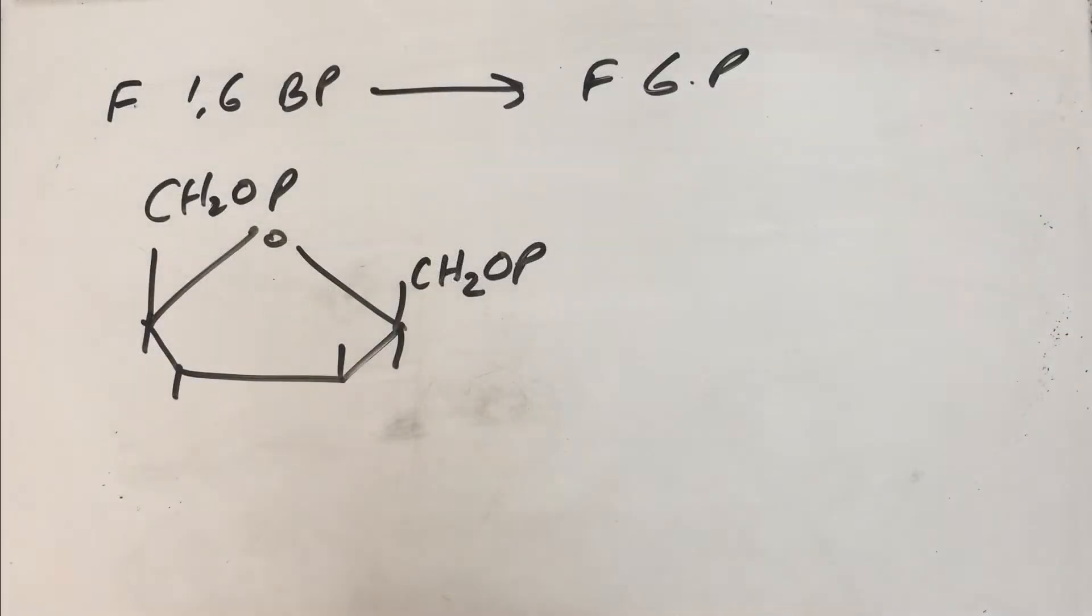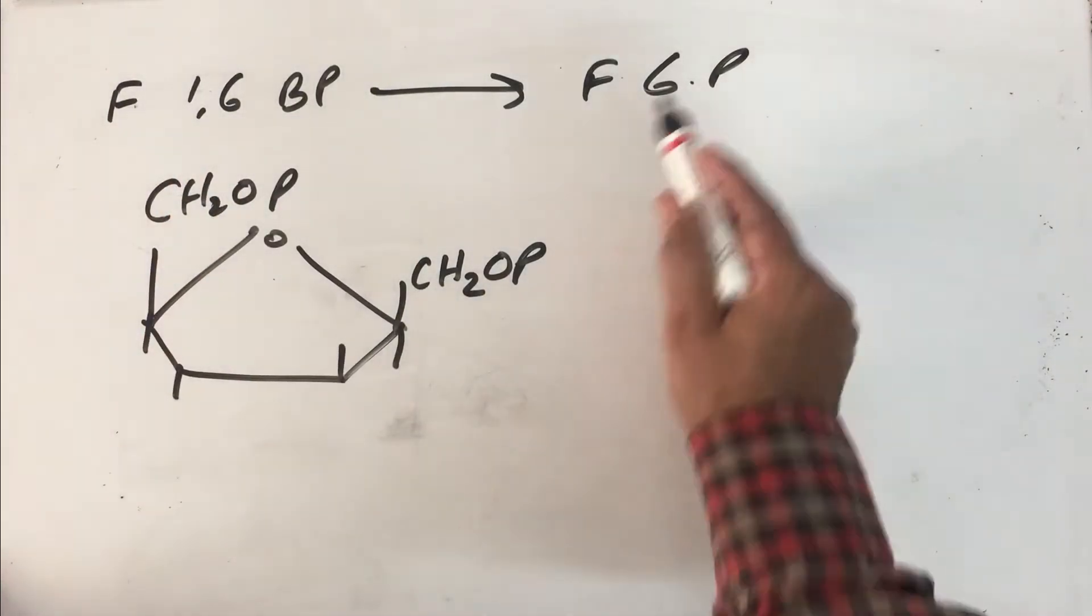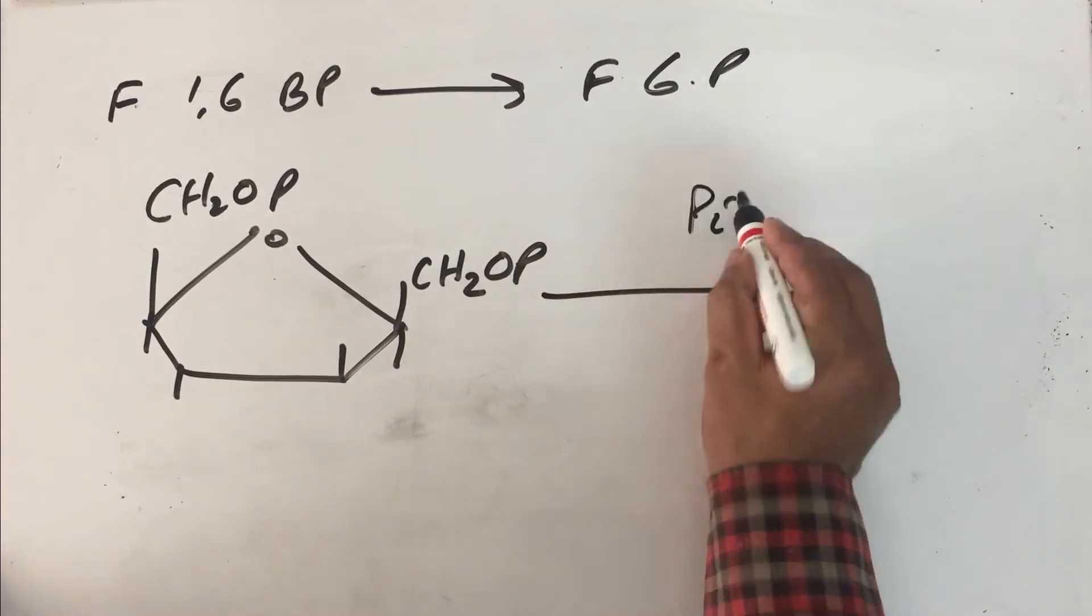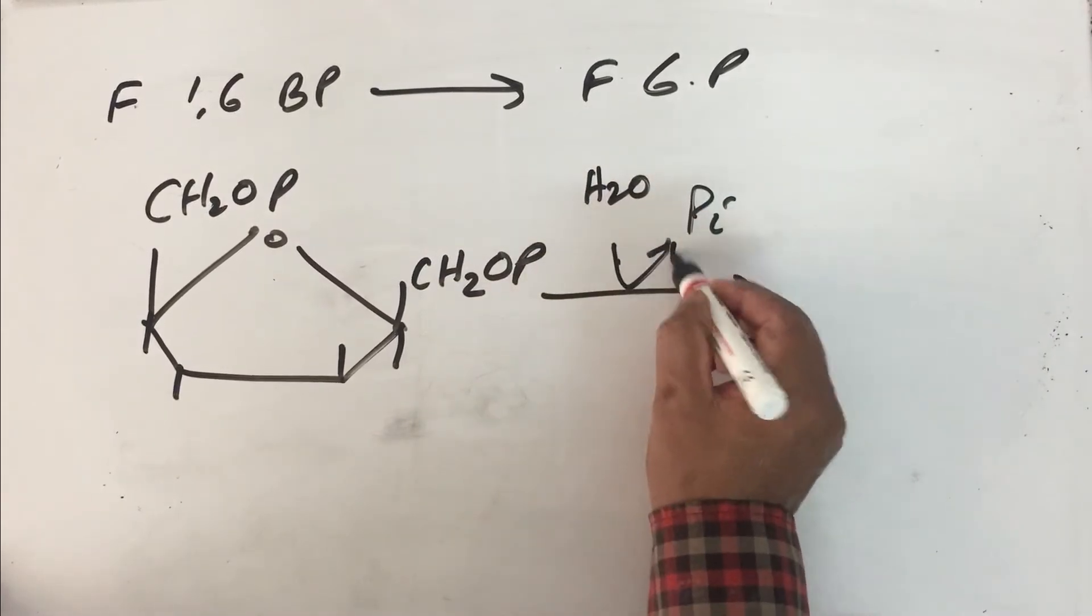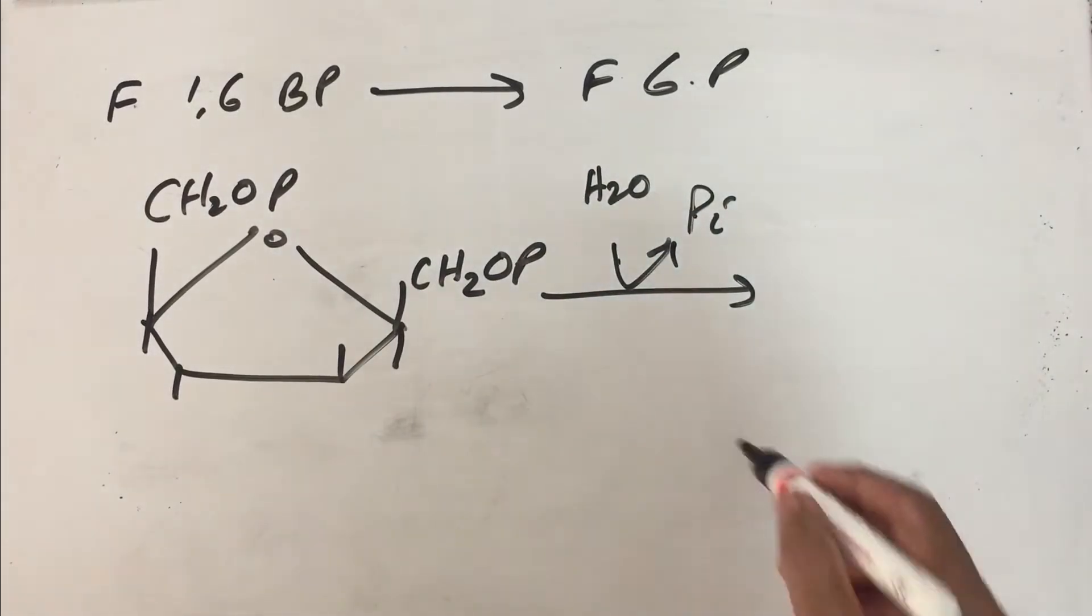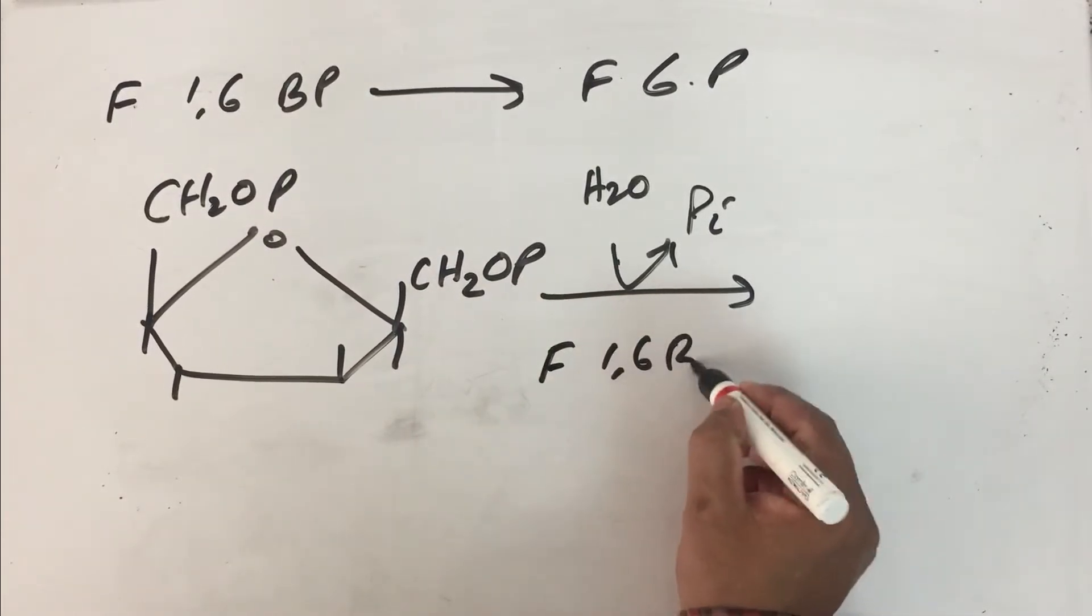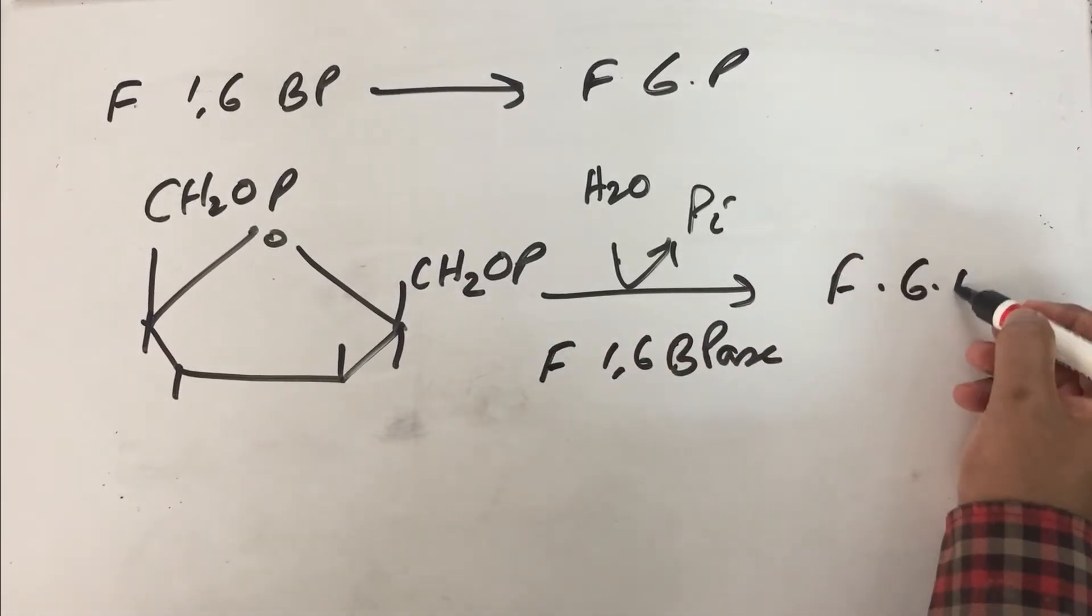The second roadblock is in converting fructose-1,6-bisphosphate into fructose-6-phosphate. This is the structure of fructose-1,6-bisphosphate. An inorganic phosphate is removed with the help of a molecule of water, so it is basically a hydrolysis reaction catalyzed by an enzyme known as fructose-1,6-bisphosphatase. So you will get fructose-6-phosphate.